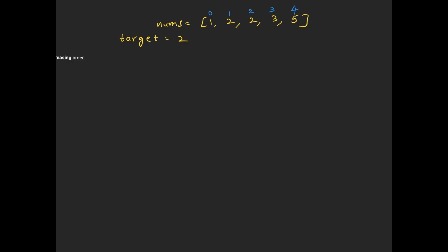Now let's look at an example with a sorted array. In this case, the target value is 2. We'll use a binary search approach to solve this problem. We'll try to find the first occurrence of the target, or the starting index of the range.